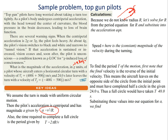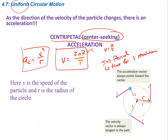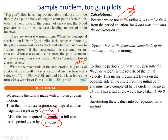Looking at the velocity given in unit vector notation, since we assume the magnitude of the velocity does not change throughout circular motion, we calculate the magnitude as the square root of the components squared: √(400² + 500²), which gives us 640.3 meters per second.